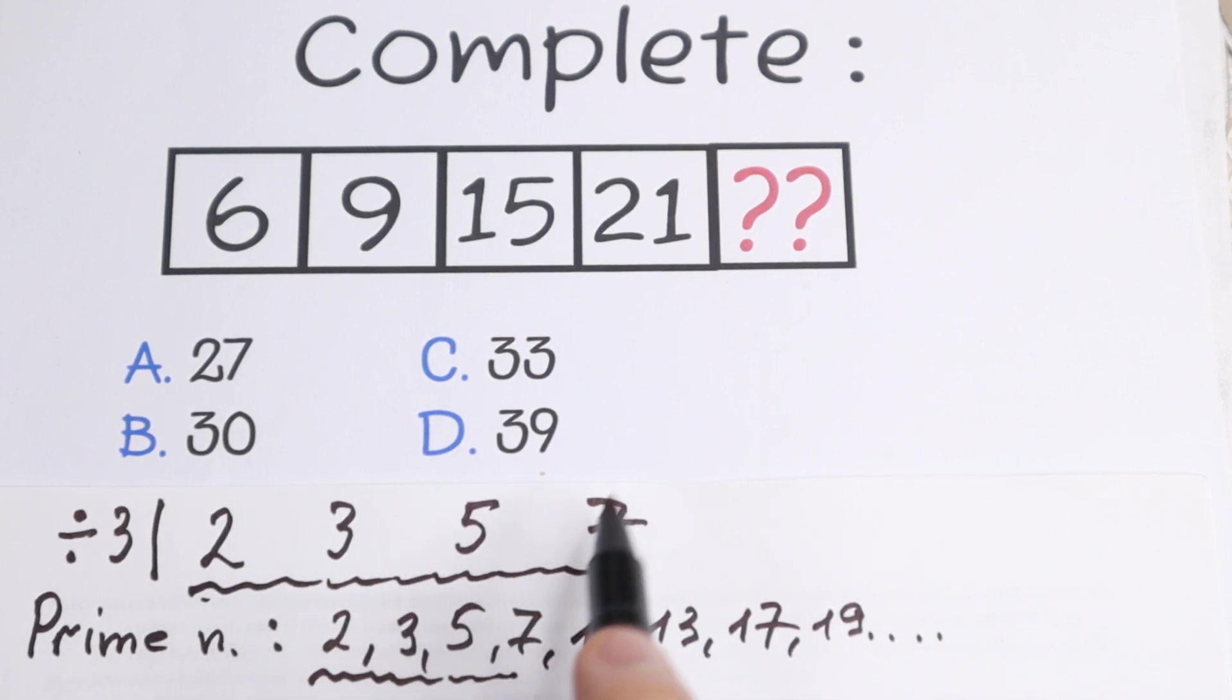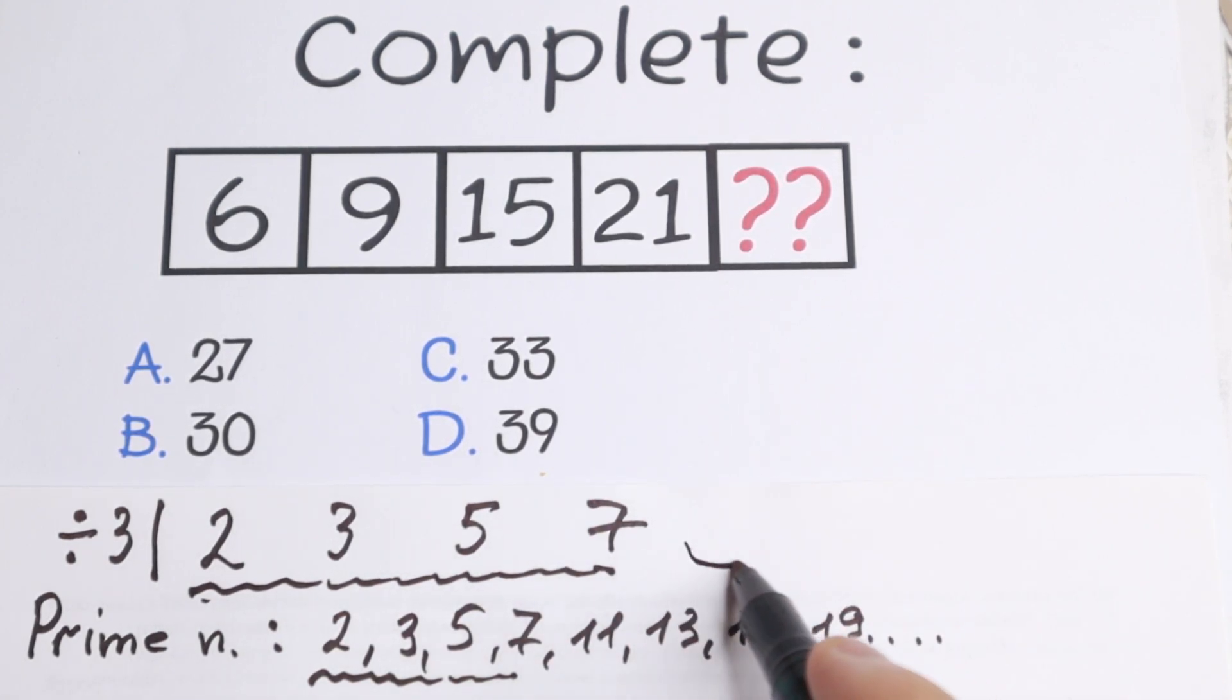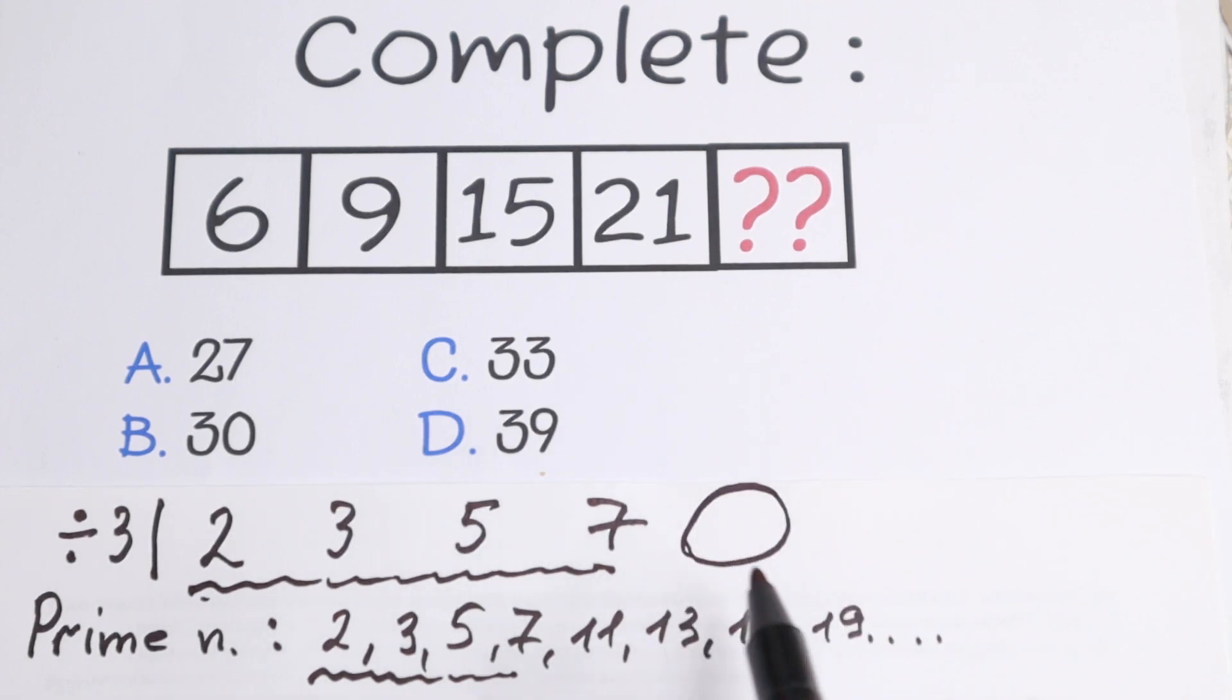And this is about 4 numbers. But what is the fifth number right here? Because we need to find it. After this 7 we have 11.